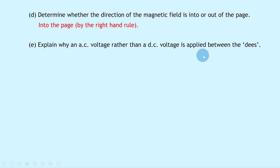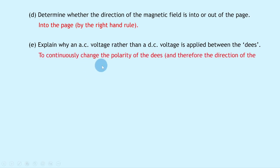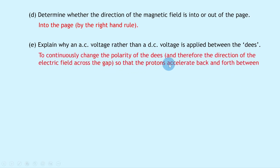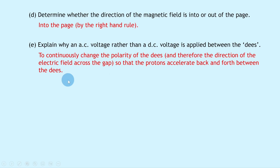Part (e) asks why an AC voltage rather than a DC voltage is applied between the Dees. It's to continuously change the polarity of the Dees and therefore the direction of the electric field across the gap, so that the protons accelerate back and forth between the Dees. With a DC voltage the protons would move one way across the gap and then not move any further.